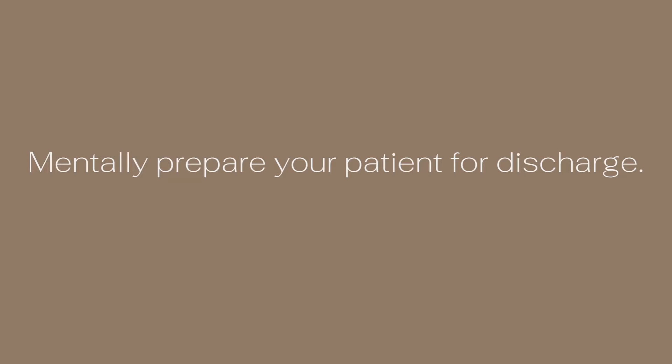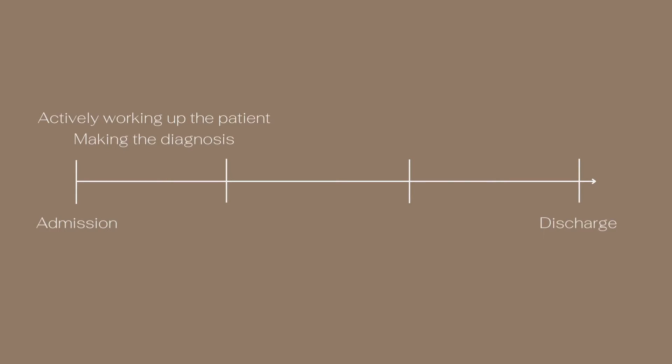Tip number four is to remember to mentally prep your patient before discharge. My husband, who is a hospitalist, actually came up with this framework and I love it. He likes to split the hospitalization into three parts: the first part is admission, where you're still working up the patient and figuring out the diagnosis — that's the really medically active part where you're doing the full workup and starting treatments. The second phase is where you've figured out the diagnosis and you're really just instituting the treatment plan. And the third part is where you're preparing for discharge.